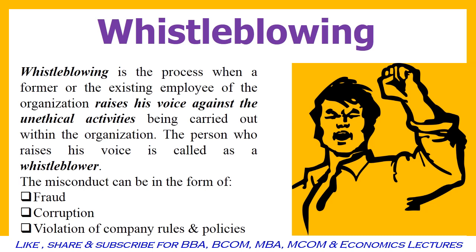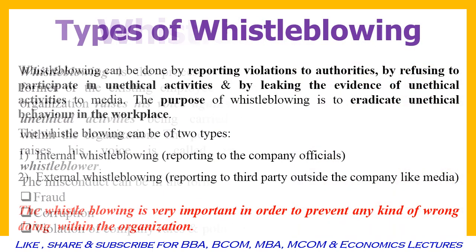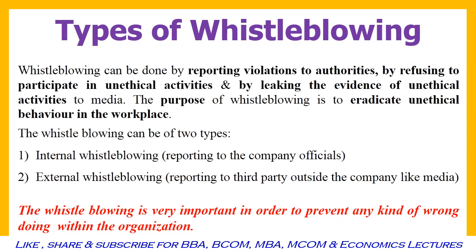Whistleblowing is done to safeguard the interest of the society and the general public. The following are the ways through which a whistleblower can blow a whistle. First is reporting the wrongdoing or violations of law to the proper or higher authorities. Second is refusing to participate in the wrongdoing occurring at the workplace. The last is leaking the evidence of wrongdoing to the media or some other authority.